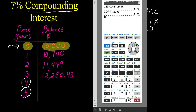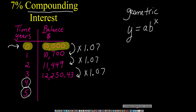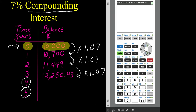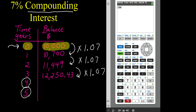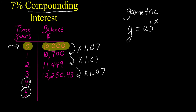That common ratio tells me that to get to the next year's balance I multiply by one point oh seven each time. Let's check: ten thousand times one point oh seven gives ten thousand seven hundred — correct. Ten thousand seven hundred times one point oh seven gives eleven thousand four hundred forty-nine — correct. Now pause the video and figure out the end-of-year balance for year four and year five.